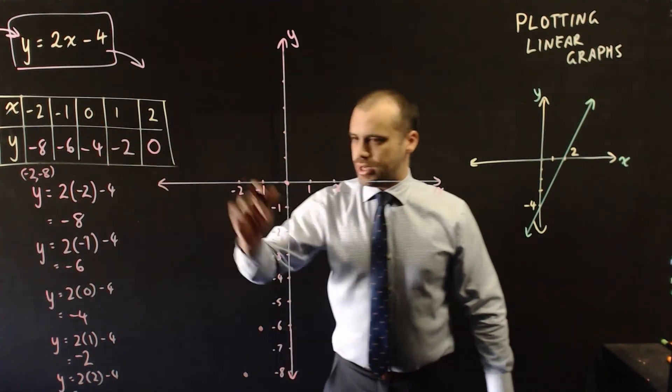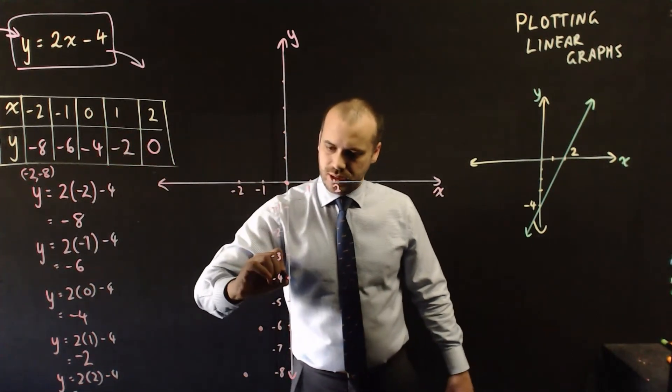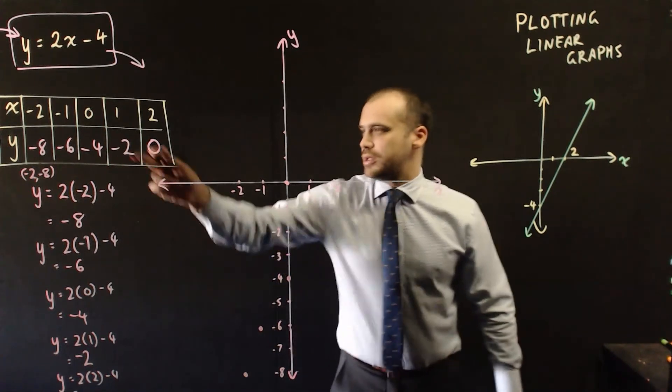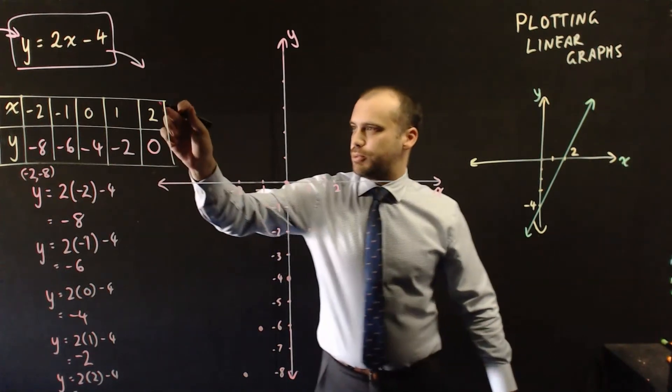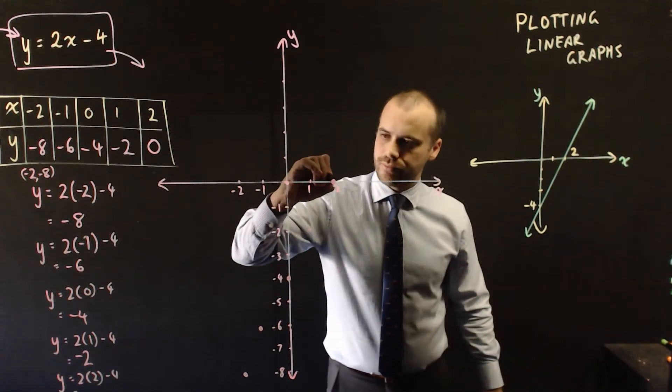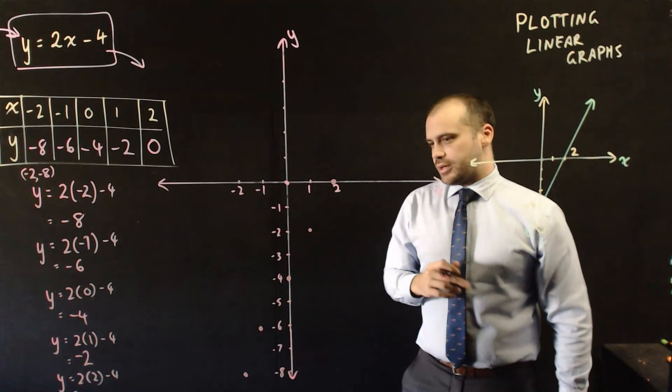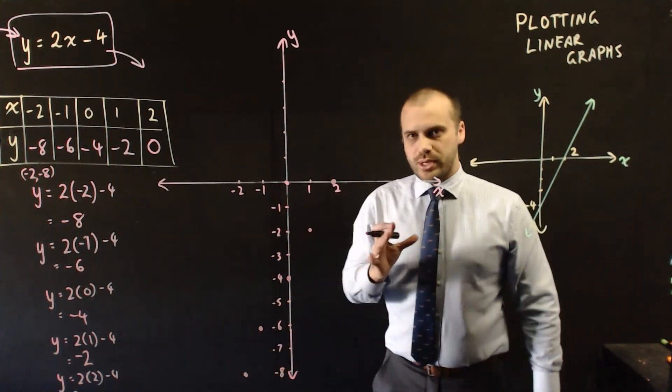Next point, 0, negative 4. Next point, 1, negative 2. Next point, 2, 0. I have now plotted all of my points.